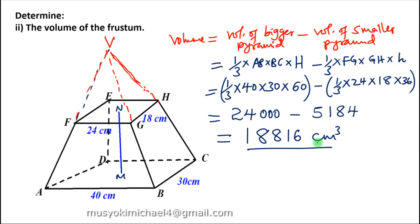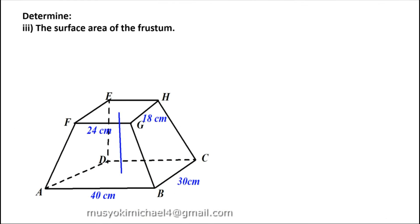Then from there we move on and look at the surface area of the frustum. Remember this is a solid frustum. In this case we need to find the area of the top part, the area of the bottom part, and the area of the four slant faces.